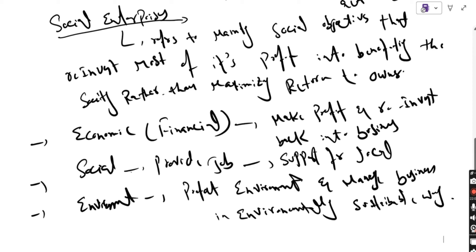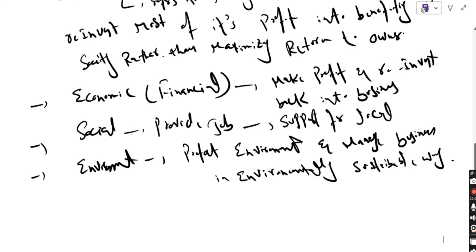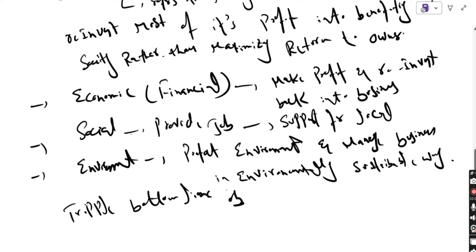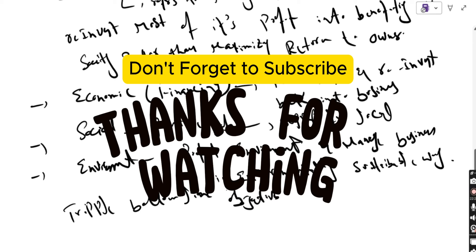These three objectives — social, economic, and environment — combined are known as the Triple Bottom Line objectives. This means that profit is not the sole objective of social enterprises.